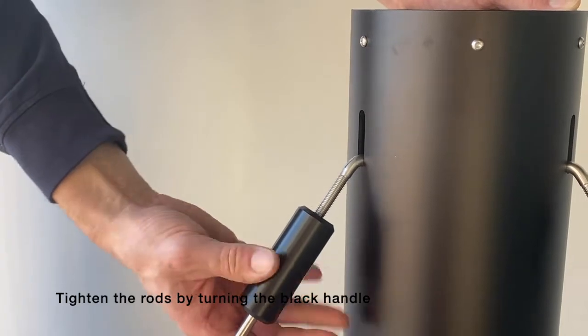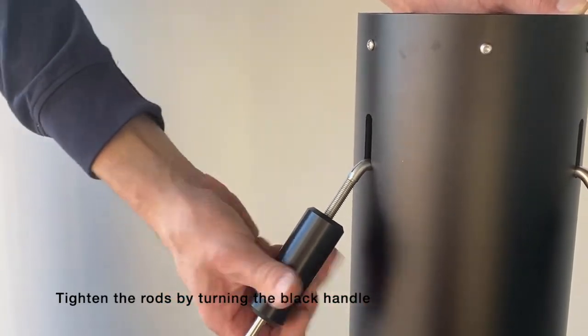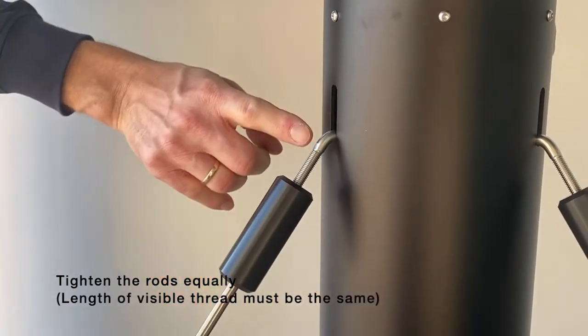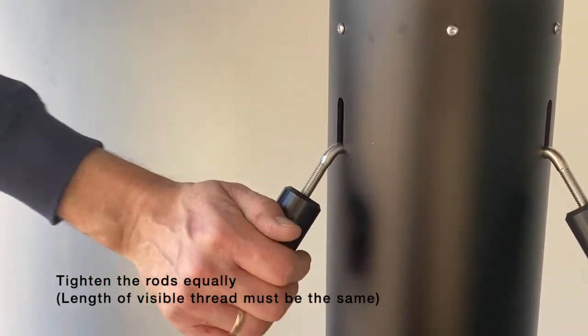Tighten the rods. They must be tightened approximately equally. You can get an idea of that by looking at how much thread is visible above the black handle.